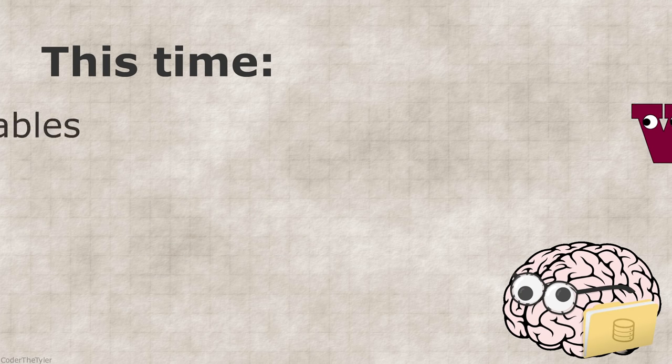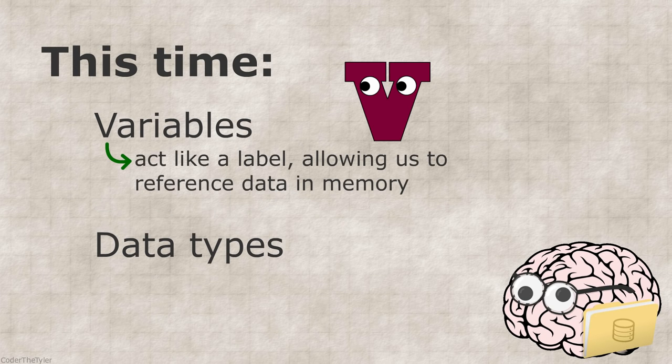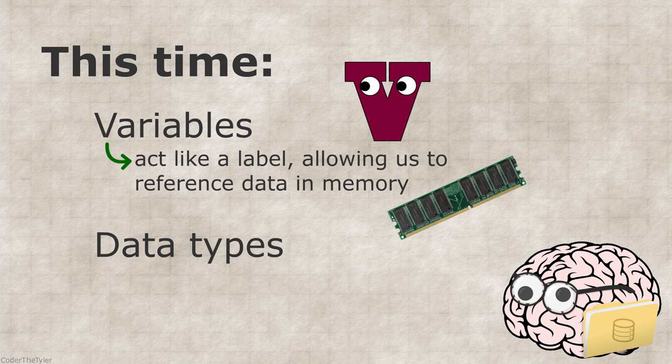In this video, we learned about variables and data types. We saw variables are simply a label given to a particular piece of data in the computer's memory, so we can easily keep track of it and do with it what we need.